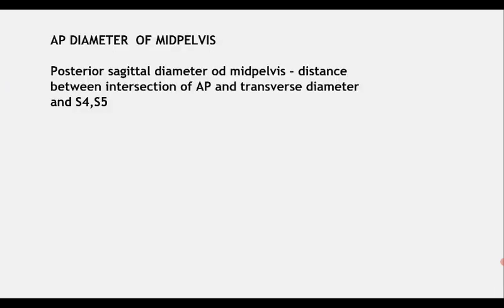The posterior sagittal diameter of the mid pelvis is the distance between the intersection of the anterior-posterior and transverse diameters and the S4-S5 junction.